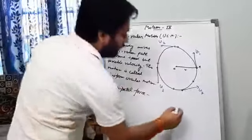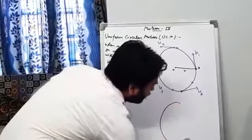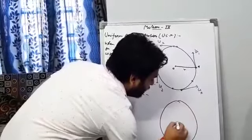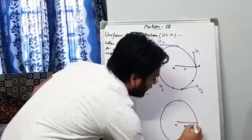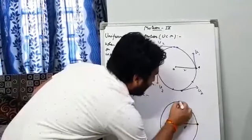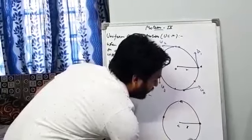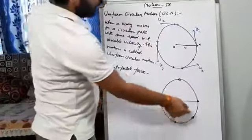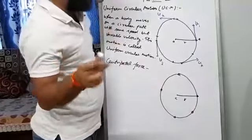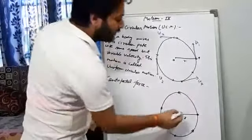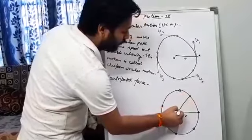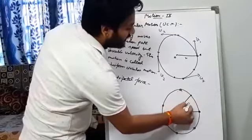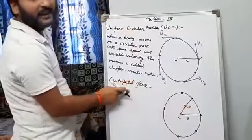Just like this is the circular motion and this is the center, this is the radius R and the object is regularly revolving from this point to this point. Whenever the body will be revolving on a circular path, always keep in your mind, the body will experience a force which acts towards the center. This force is called centripetal force.